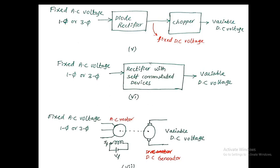The fifth one: by using a diode rectifier you get fixed DC voltage, but to get variable DC voltage the output of the diode rectifier is connected with a chopper or DC to DC converter, from which we get variable DC voltage. The sixth one is a rectifier with self-commutated switches — devices like MOSFET or IGBT — which are self-commutated, unlike thyristors which are naturally commutated. Using these we can get variable DC voltage.